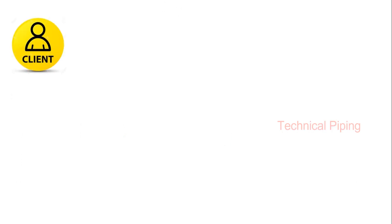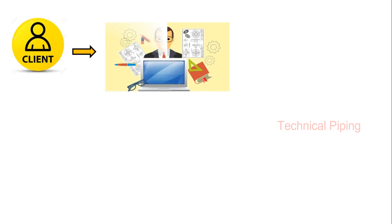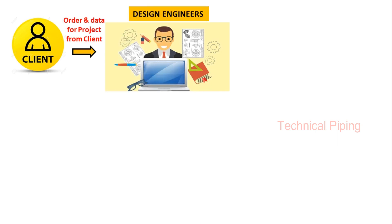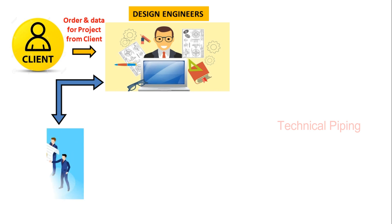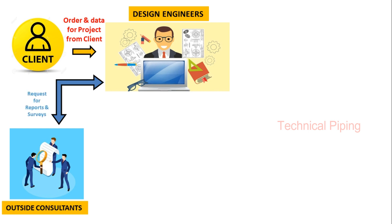Number one: if a client needs a plant in their country, they release a tender with order and data to designing companies or their own design department. Number two: the designer makes the plant design based on client requirements. If the designer needs more data and survey reports, they request outside consultants to get more details.